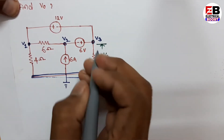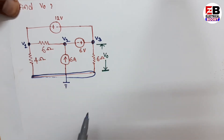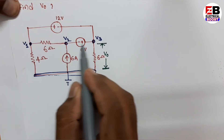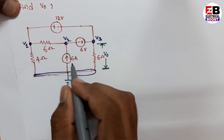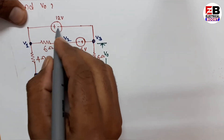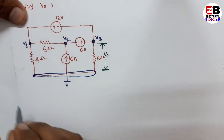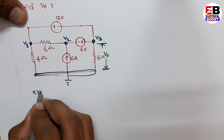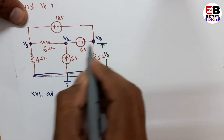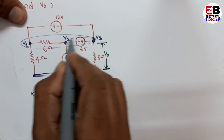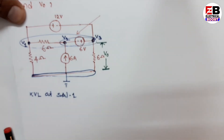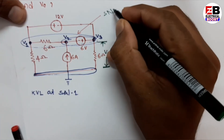Here we see that between V1 and V3 — that is node 1 and node 3 — a voltage source is present, so these form a supernode. Again, between V2 and V3 a voltage source is present, so this is also a supernode. We label the first as Supernode 1 (SN1) and the second as Supernode 2 (SN2).